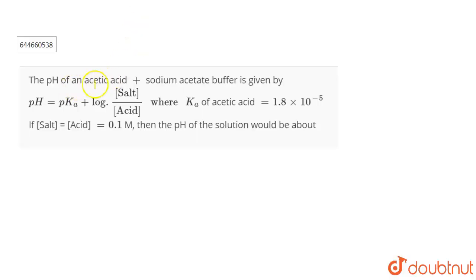The question is the pH of an acetic acid and sodium acetate buffer is given by pH equals pKa plus log of salt upon acid, the concentration of salt upon acid. This equation is basically known as the Henderson equation, which is used to find out the pH of the buffer solution.